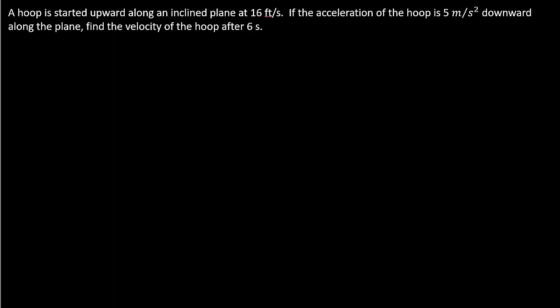Alright, so this one's not bad, we just have to get the velocity function. So let's see what it tells us. It gives us the acceleration, and actually when you look at it, it gives us the initial acceleration. So we know that a of t is equal to negative 5 meters per second squared downward, so a of t is negative 5.